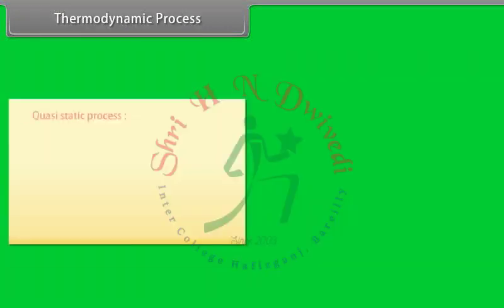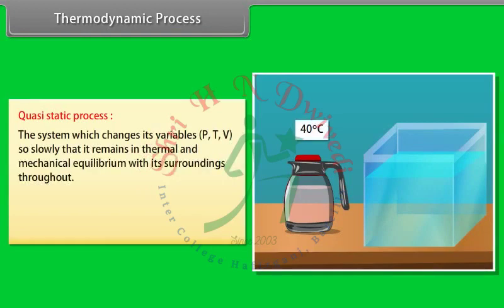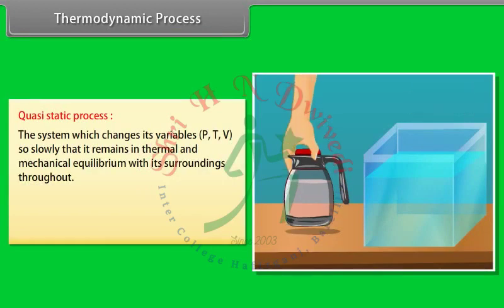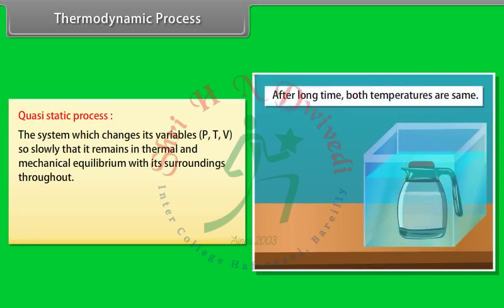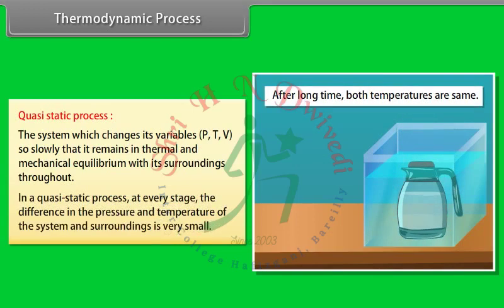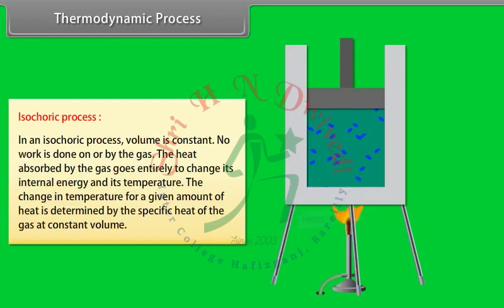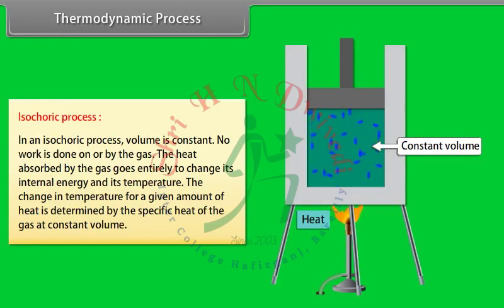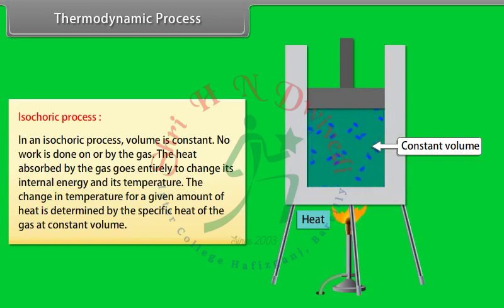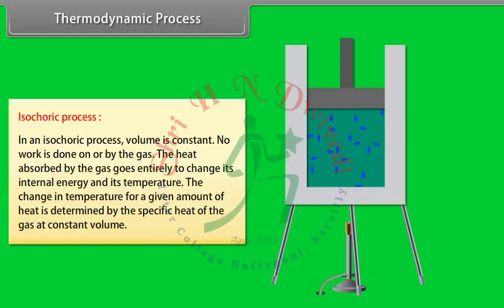A quasi-static process is one in which the system changes its variables so slowly that it remains in thermal and mechanical equilibrium with its surroundings throughout; at every stage, the difference in pressure and temperature between system and surroundings is very small. In an isochoric process, volume is constant, no work is done on or by the gas, and all heat absorbed goes to change the internal energy and temperature. The change in temperature for a given amount of heat is determined by the specific heat at constant volume.